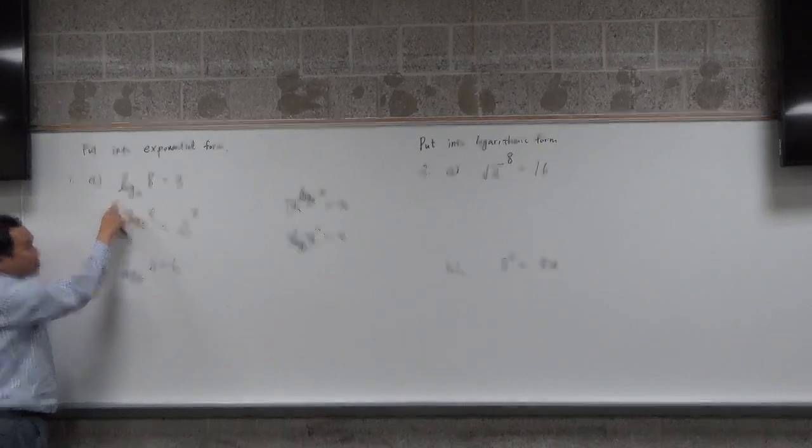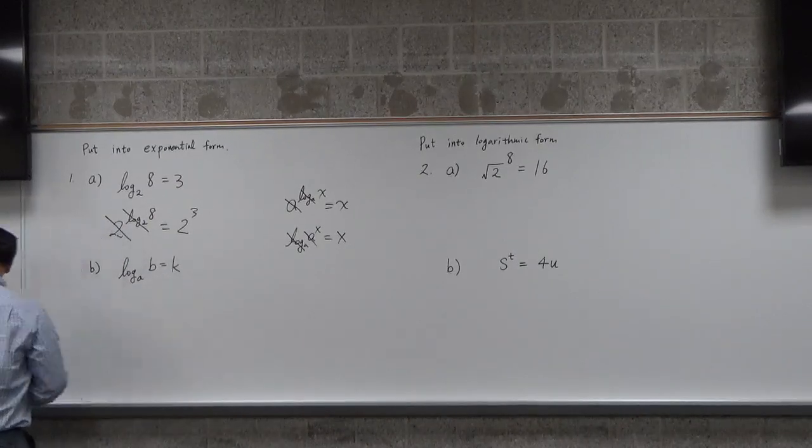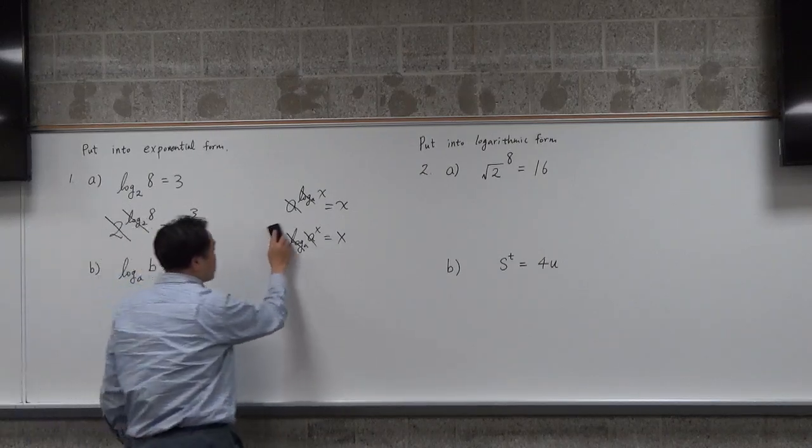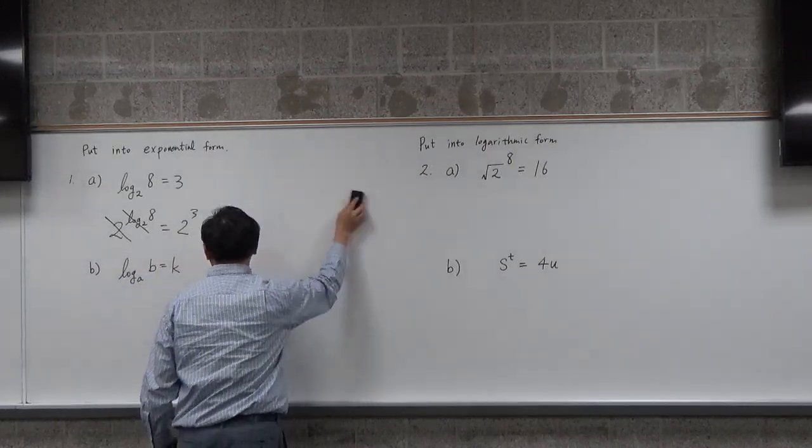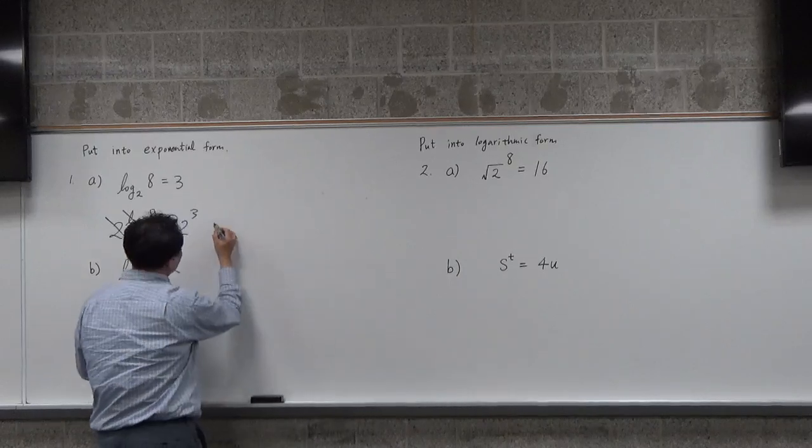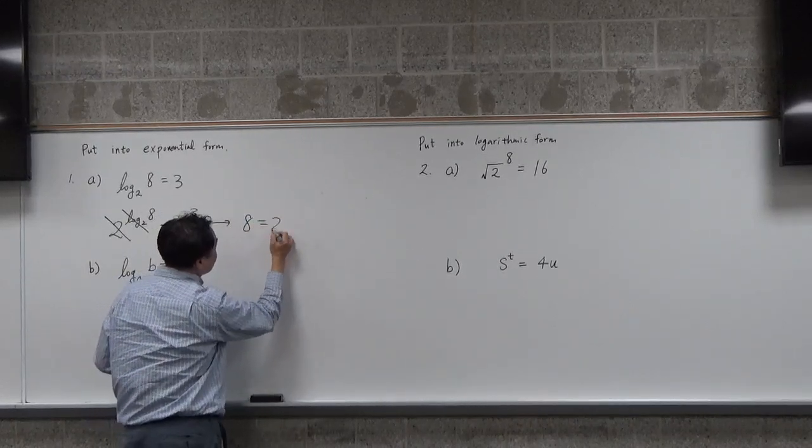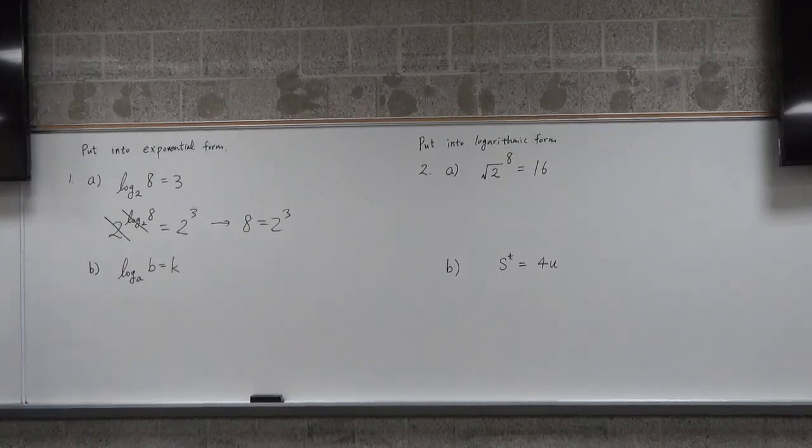The way you cancel a logarithm is by raising over 2, raising over some power, and therefore you end up with 8 equals to 2 to the third power. That's it. That's the exponential form.